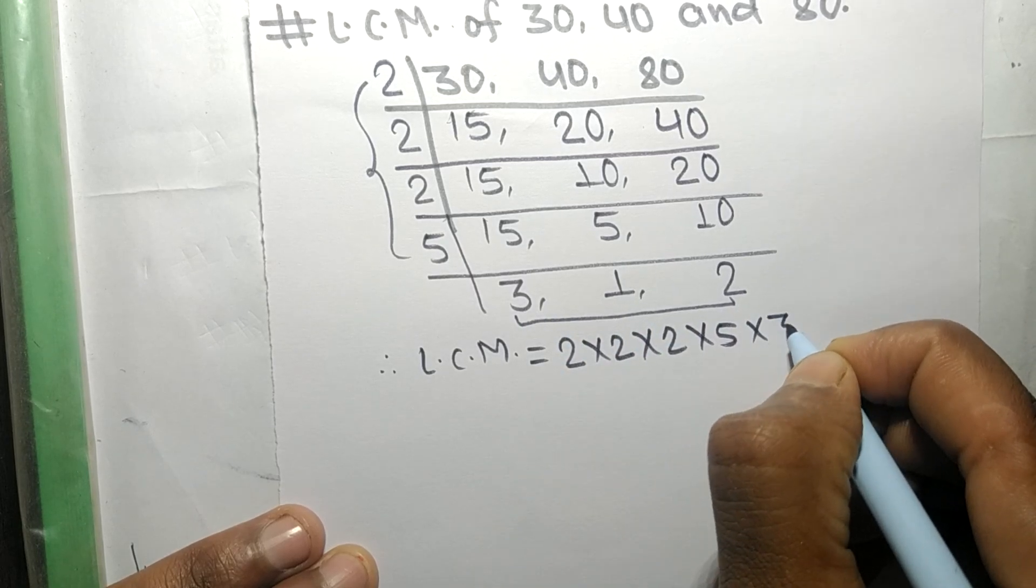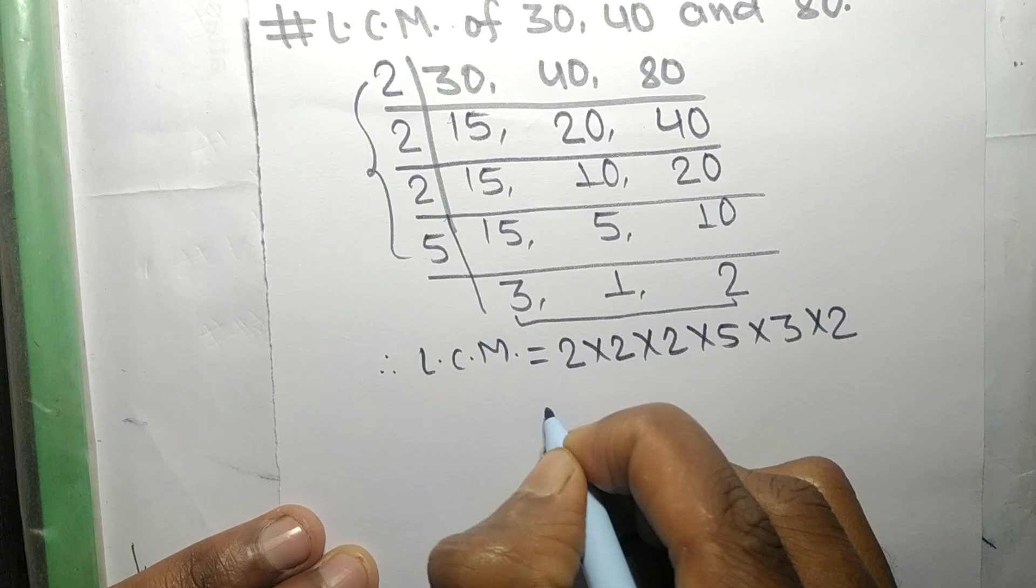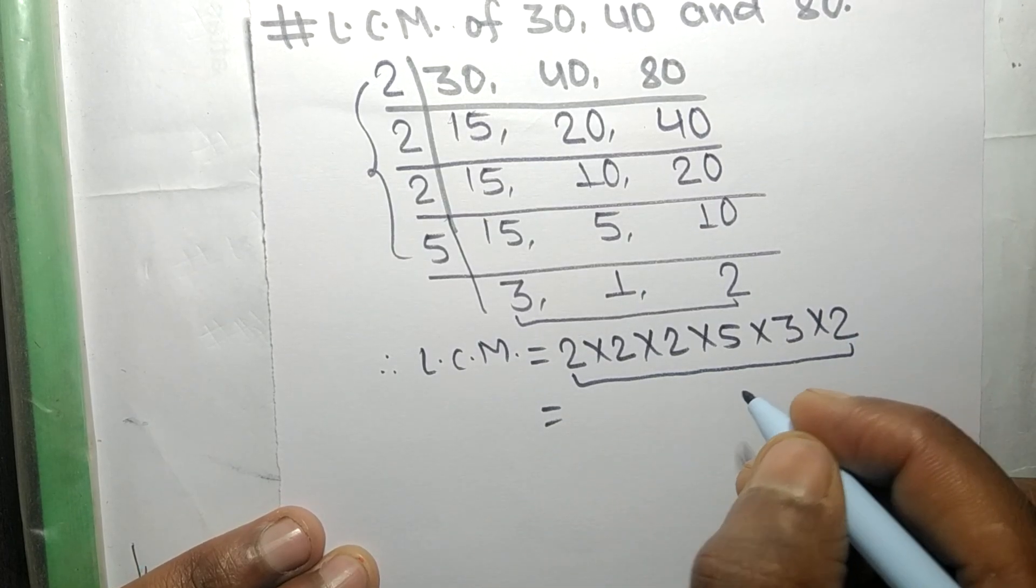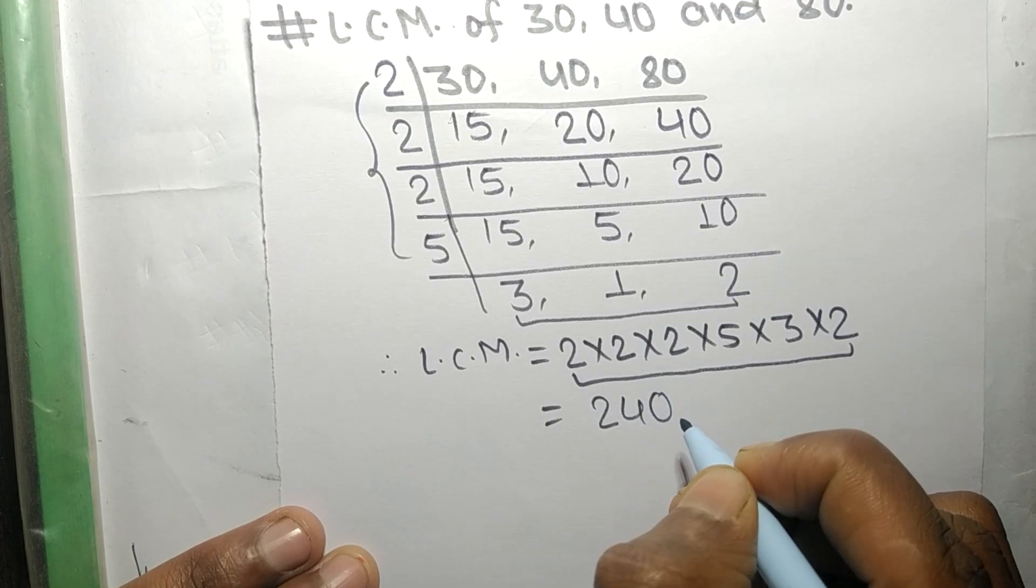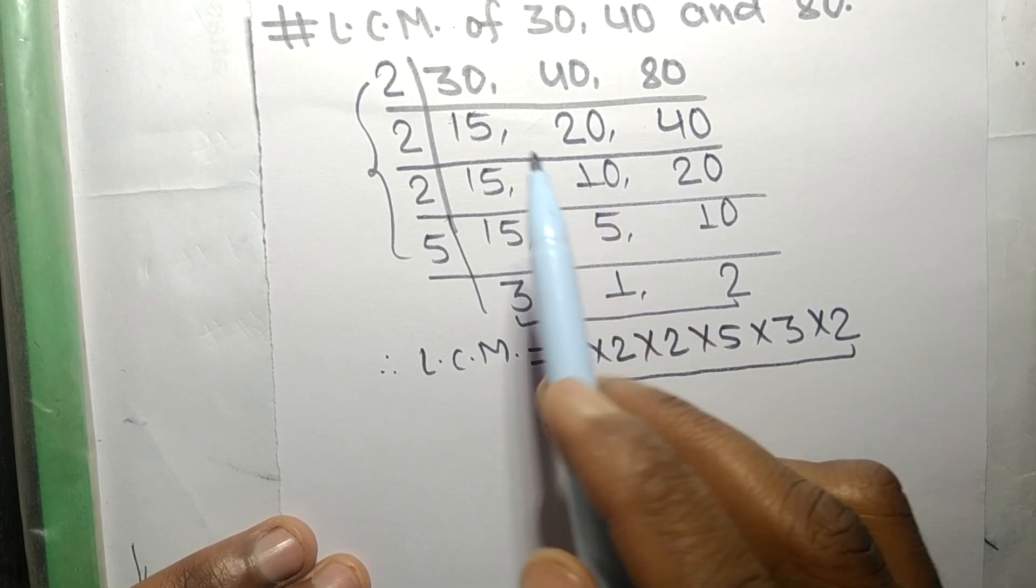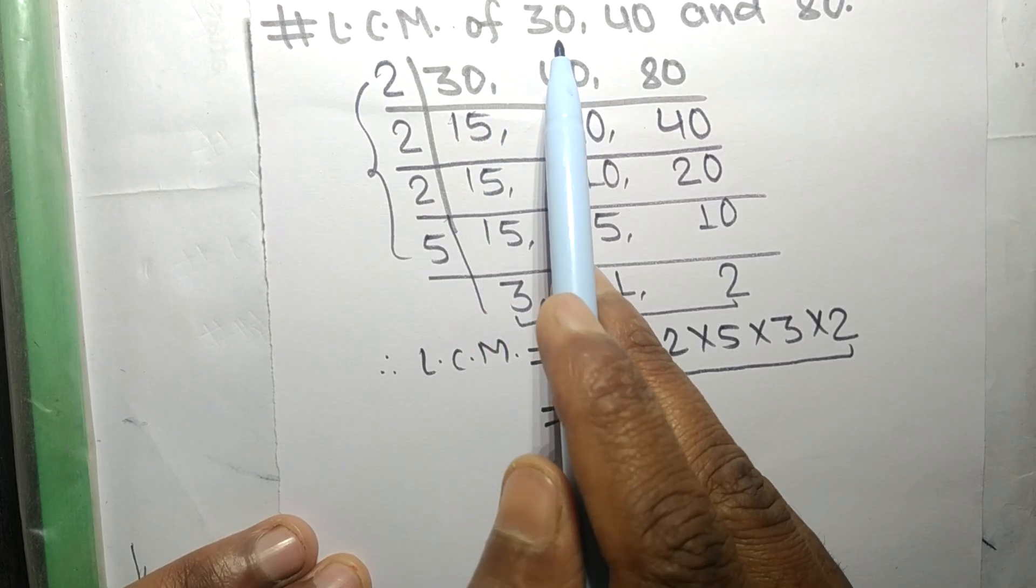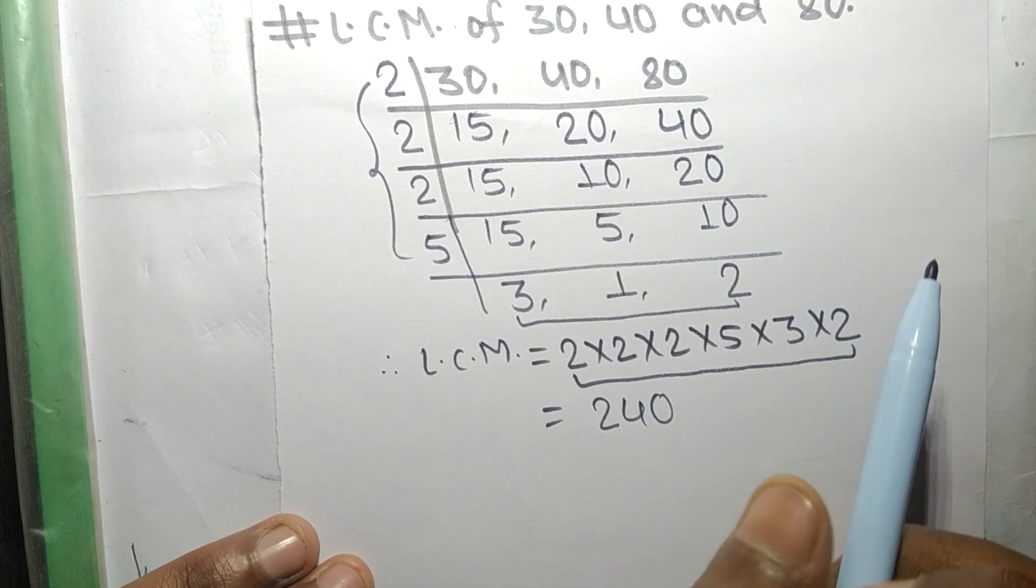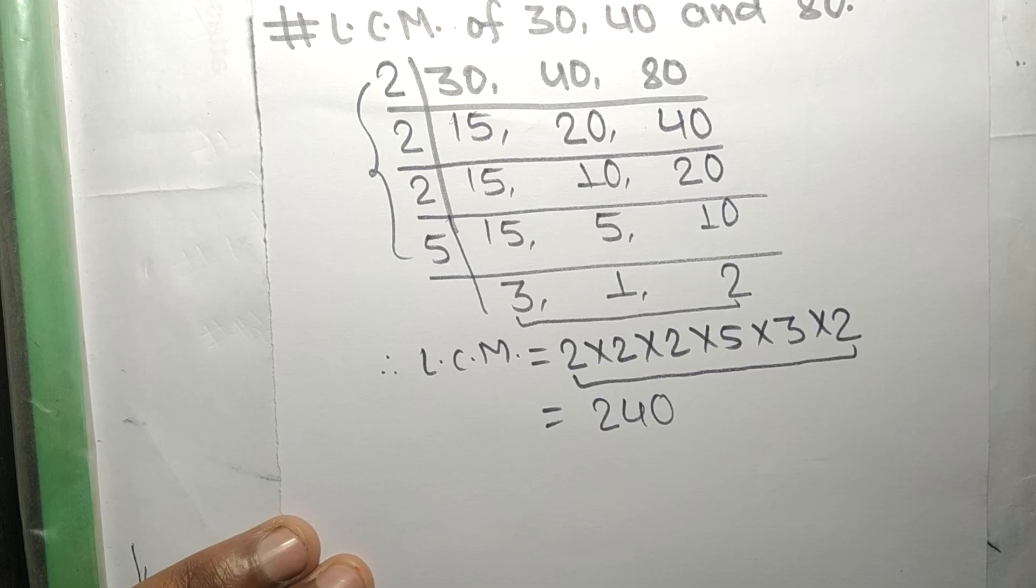So multiplied by 3 and 2. By multiplying all these numbers we get 240. So 240 is the LCM of 30, 40 and 80. So this much for today and thanks for watching.